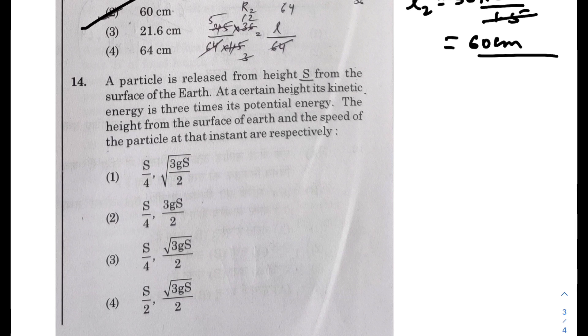Next, a particle is released from a height S from the surface of the earth. At a certain height its kinetic energy is three times its potential energy. So K equals 3U and we know K plus U equals E. So what I can say, E equals 4U at that point. The height from the surface of earth and the speed of the particle at that instant are respectively - it is released from height S. At certain height its kinetic energy is three times its potential energy.